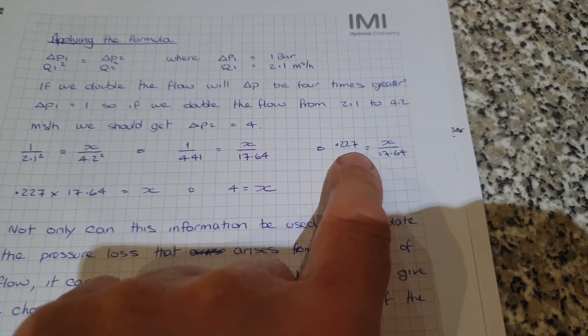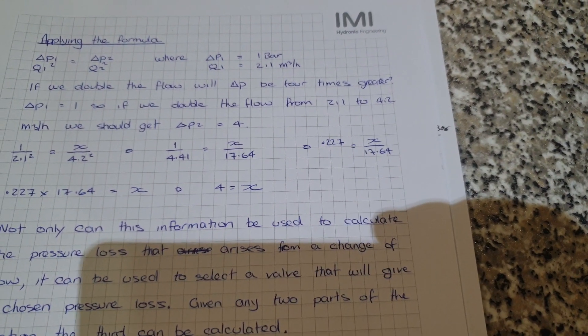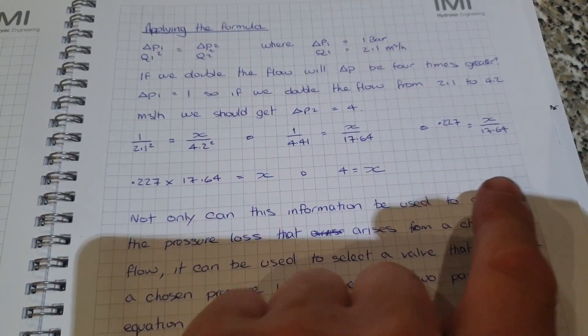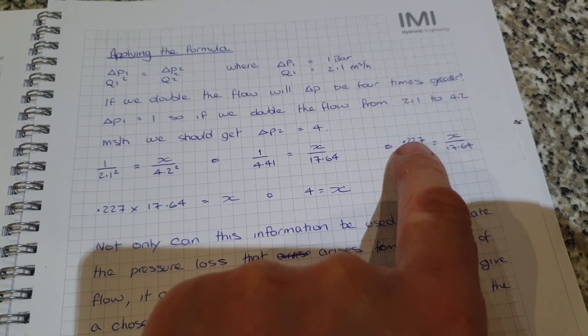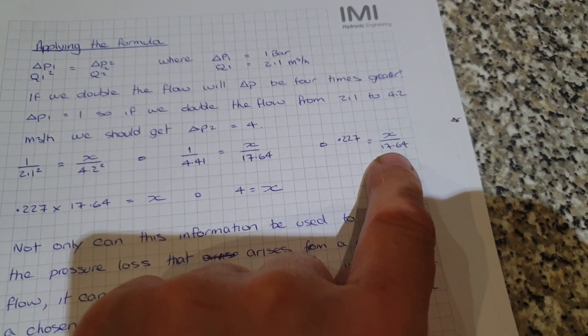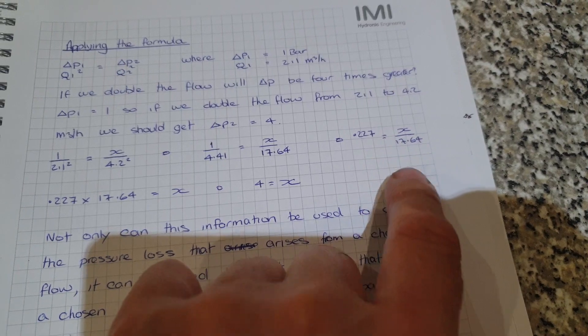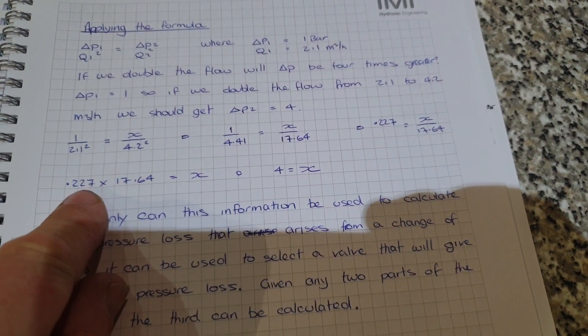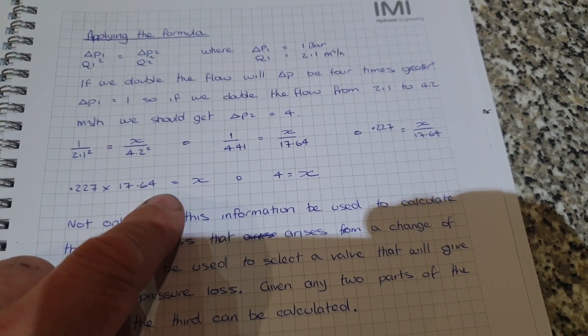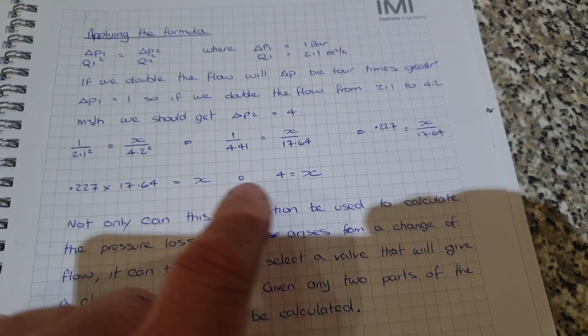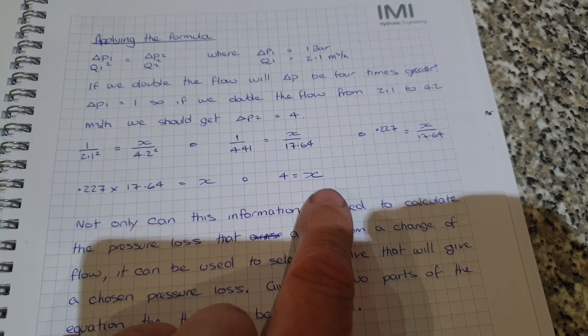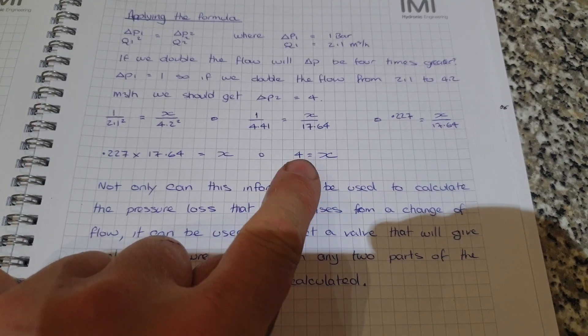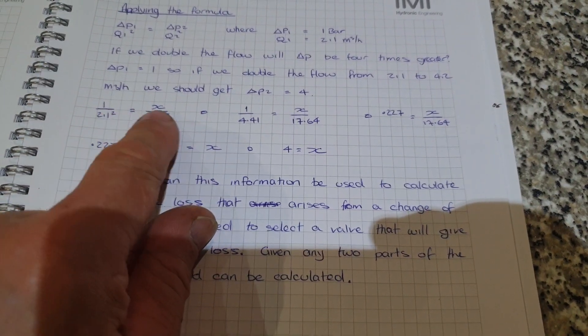Then we will divide 1 by 4.41, so that comes to 0.227 equals X divided by 17.64. We then multiply both sides by the division side of this one, which cancels it out or moves it across, giving us 0.227 times 17.64 equals X. If we do the maths there, we come to an answer of 4. So X is equal to 4, which means that if we double the flow, we get 4 times the delta P, proving the formula to be correct.